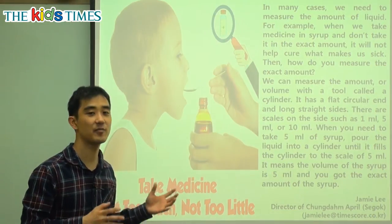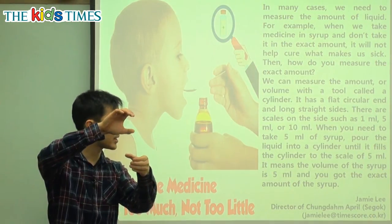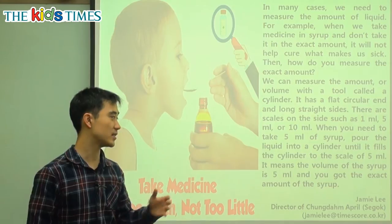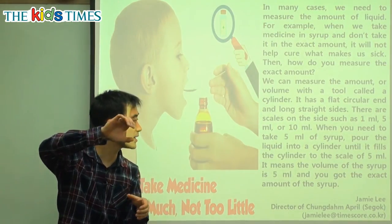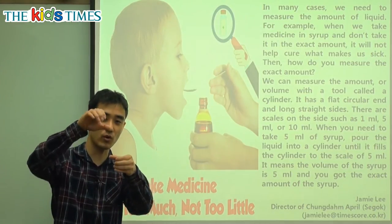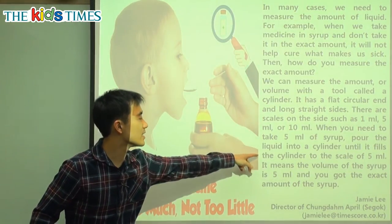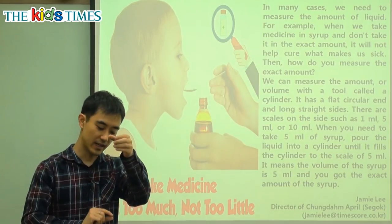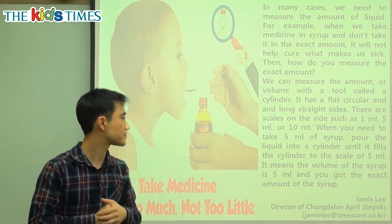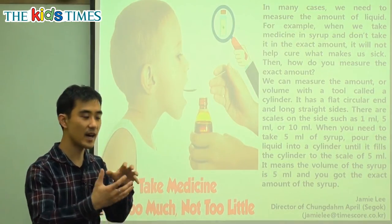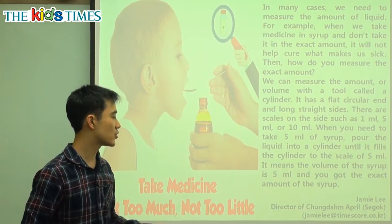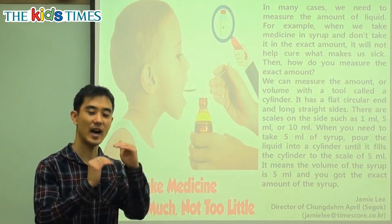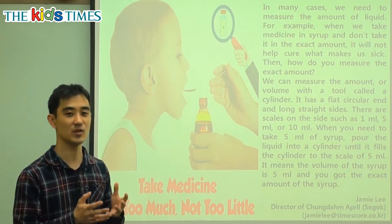When you need to take 5 milliliters of syrup, pour the liquid into a cylinder until it fills to the scale of 5 milliliters. We pour the liquid inside the cylinder, and it goes up to 5 milliliters, then we stop. That means the volume of the syrup is 5 milliliters and you got the exact amount.